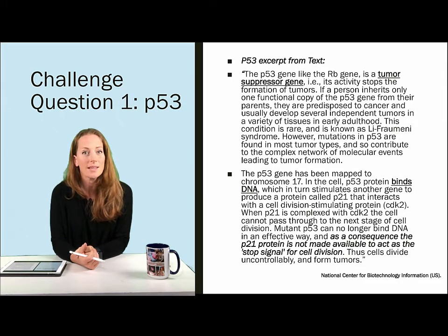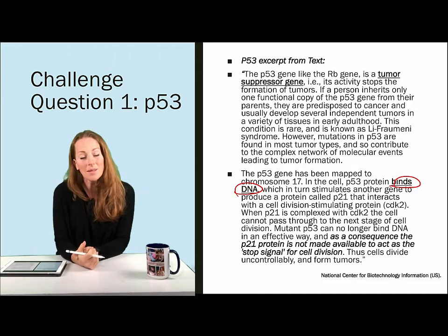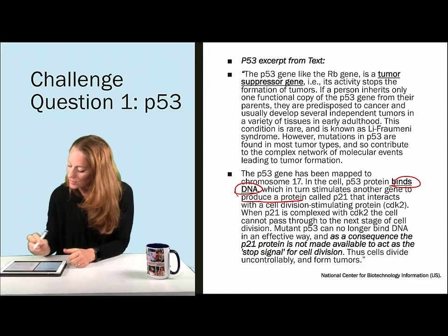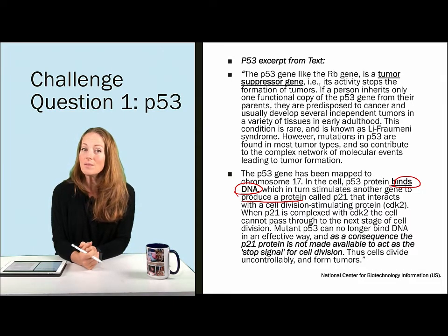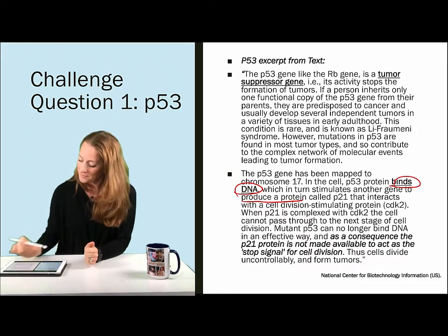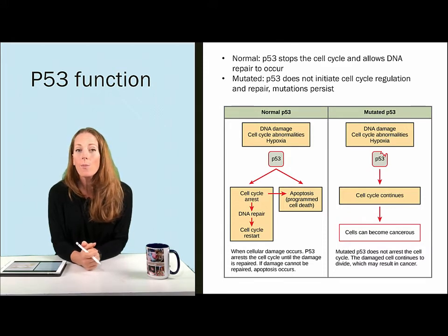Let's think of some key words here. P53 binds to the DNA and stimulates another gene to be activated, producing a protein called P21. If mutated, this can have very deleterious effects on the cell, leading to multiple tumors being formed. Let's take a look at a model for P53 — think about what kind of gene regulation is being described here.